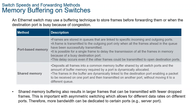Regarding memory buffering on switches, an Ethernet switch may use buffering techniques to store frames before forwarding them. Buffering may also be used when the destination port is busy due to congestion, with the switch storing the frame until it can be transmitted. There are two methods of memory buffering: port-based memory and shared memory buffering. Shared memory buffering results in larger frames being transmitted with fewer dropped frames, which is important with asymmetric switching, allowing different data rates on different ports and dedicating more bandwidth to certain ports, such as a server port running 10 Gbps or 1 Gbps.